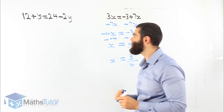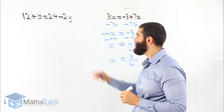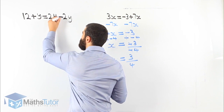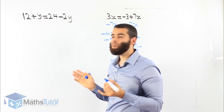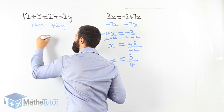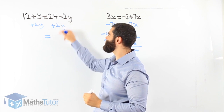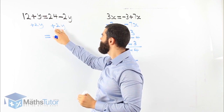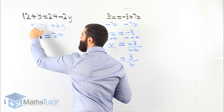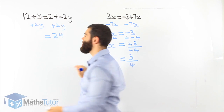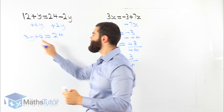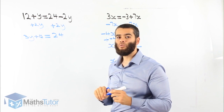12 plus y equals 24 minus 2y. Again, we have pronumerals on both sides. We want to get rid of the one on the right-hand side. The opposite of minus 2y is plus 2y. Plus 2y on the other side as well. 24 minus 2y plus 2y — negative 2y plus 2y is gone, we have 24. And 12 plus y plus 2y — y plus 2y is 3y, plus 12. So we have 3y plus 12 equals 24.